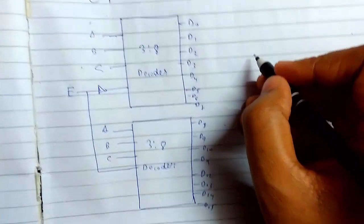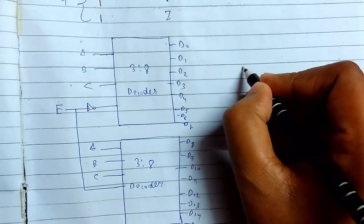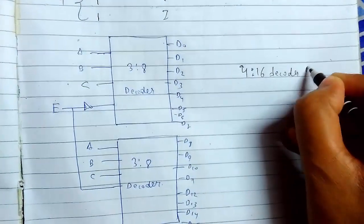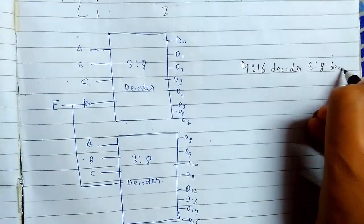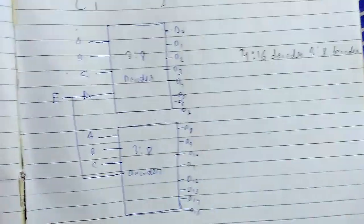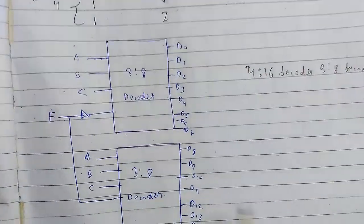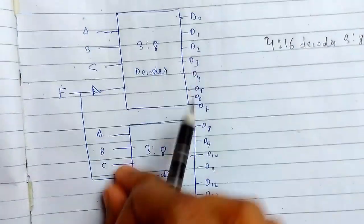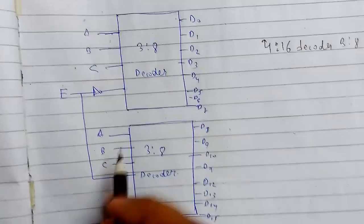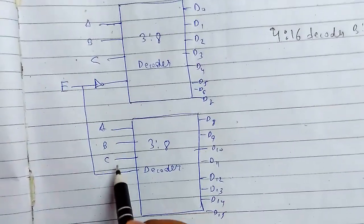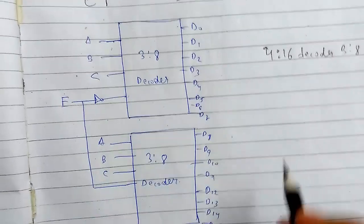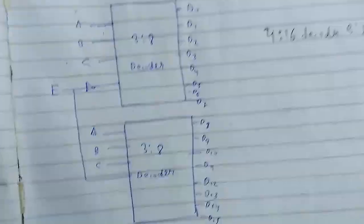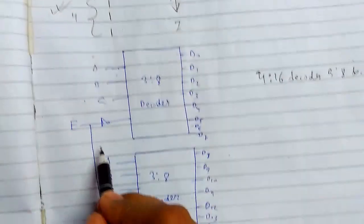Now let us look at 4-to-16 decoder using 3-to-8 decoder. These are two 3-to-8 decoders. This will have 3 inputs and this is the reverse side of it. It will have 8 outputs here, next 8 outputs here. The working will be just the same.